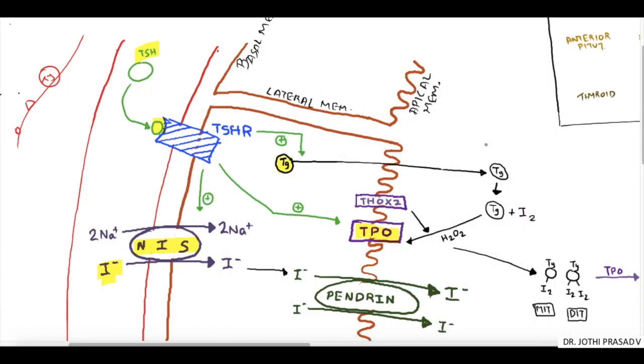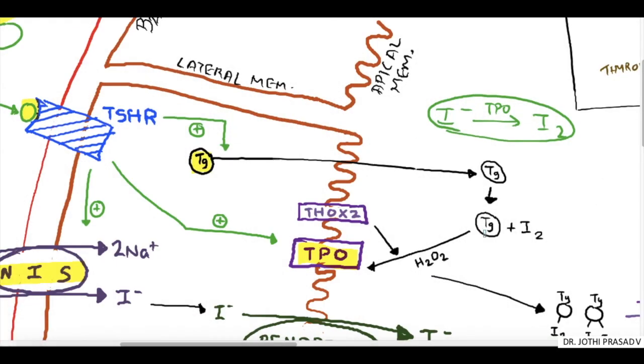The next step is oxidation, or in simple term, conversion of the iodide to iodine molecule in the presence of TPO enzyme. It is known as oxidation reaction. The next reaction is iodination of thyroglobulin, that is binding of inorganic iodine to organic thyroglobulin compound in the presence of TPO enzyme. Hence this reaction is also called organification reaction.